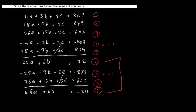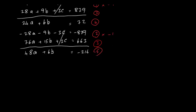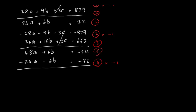Taking equations 4 and 5, I can see both have plus 6b. Multiplying equation 4 by minus 1 gives minus 24a minus 6b equals minus 72. Adding equation 5: 48a plus 6b equals minus 216. The b terms disappear. We get minus 24 plus 48 equals 24a, and minus 216 minus 72 equals minus 288. Dividing by 24 gives a equals minus 12.